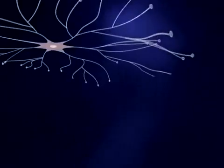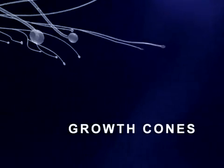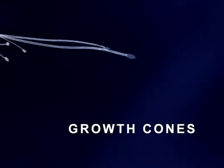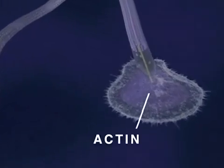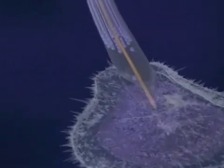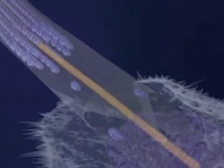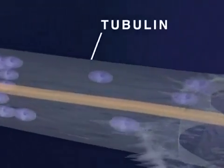At the end of each neurite is a growth cone where structural proteins are assembled to form the cell membrane. Two principal proteins involved in growth cone function are actin, which is responsible for the pulsating motion seen here, and tubulin, a major structural component of the neurite membrane.